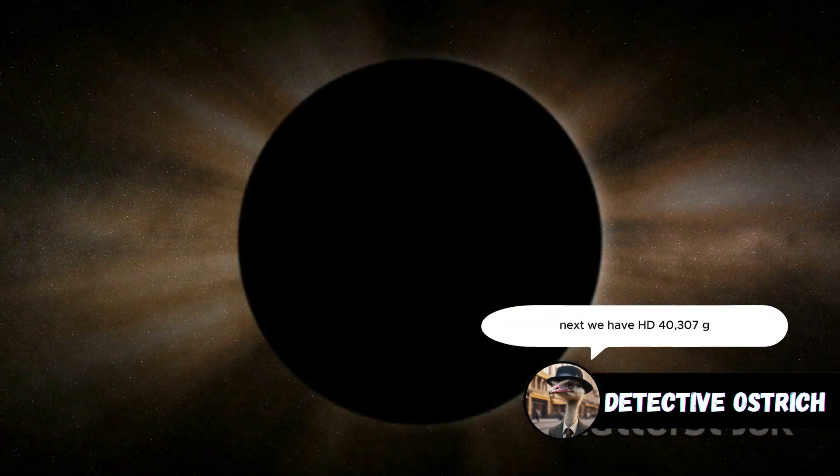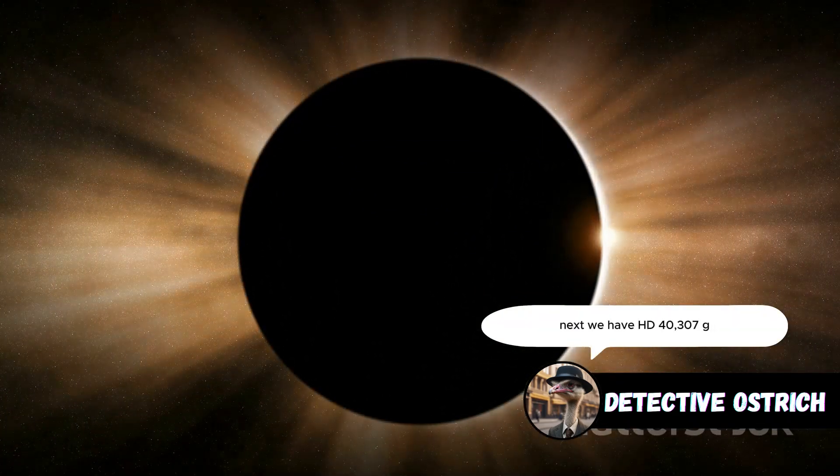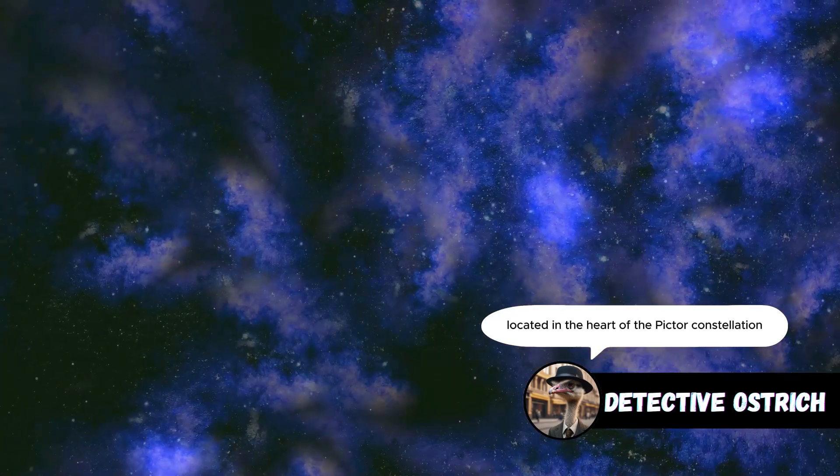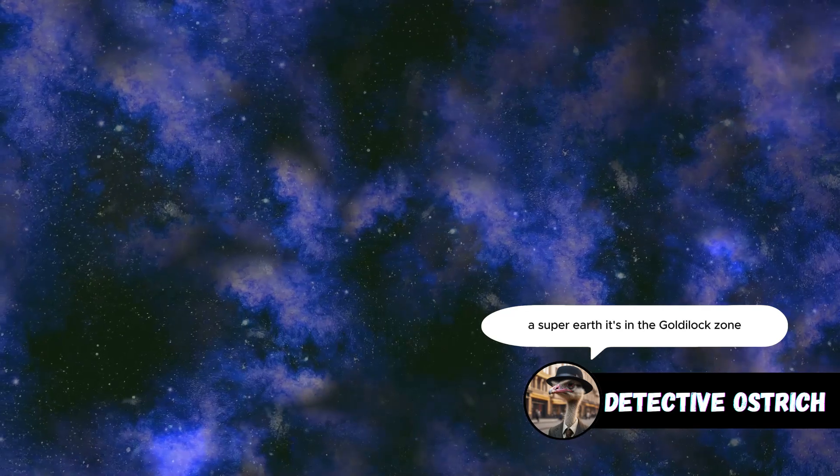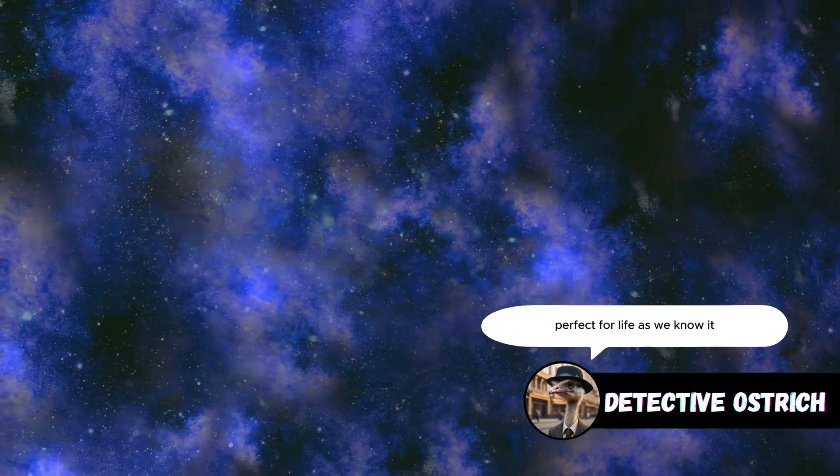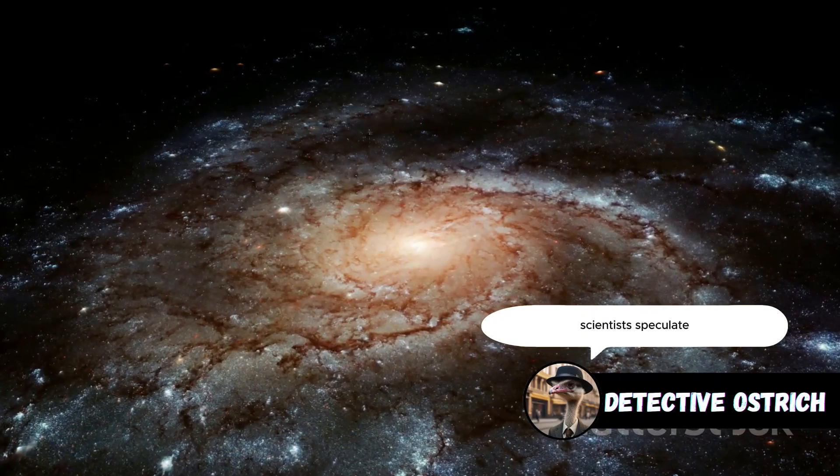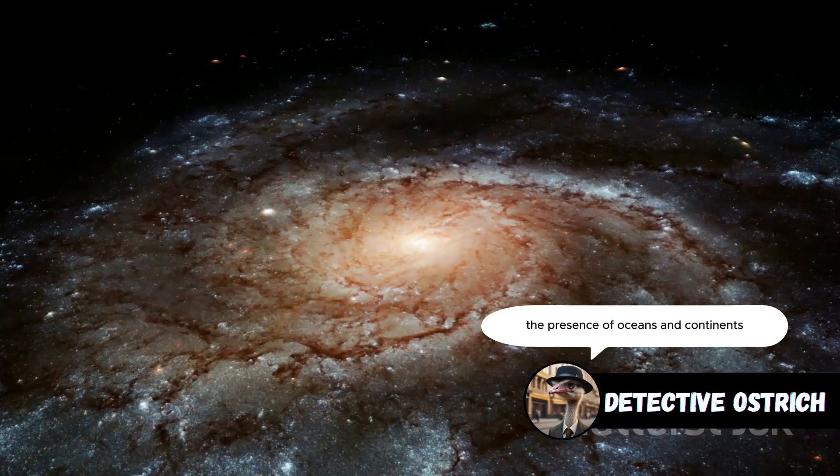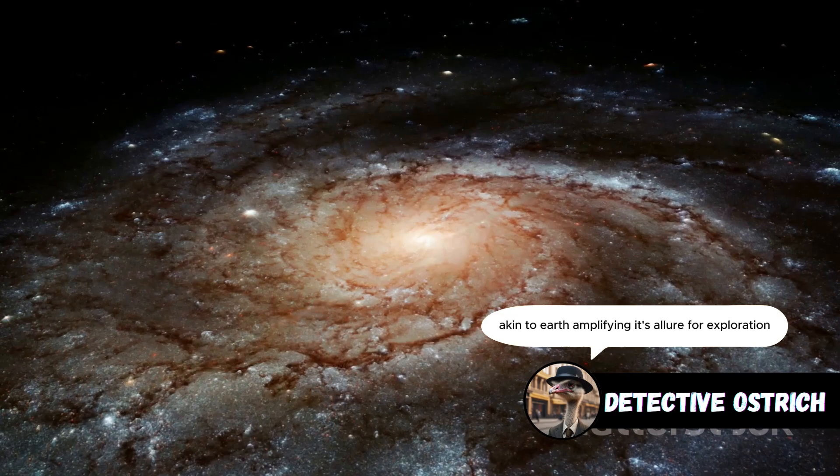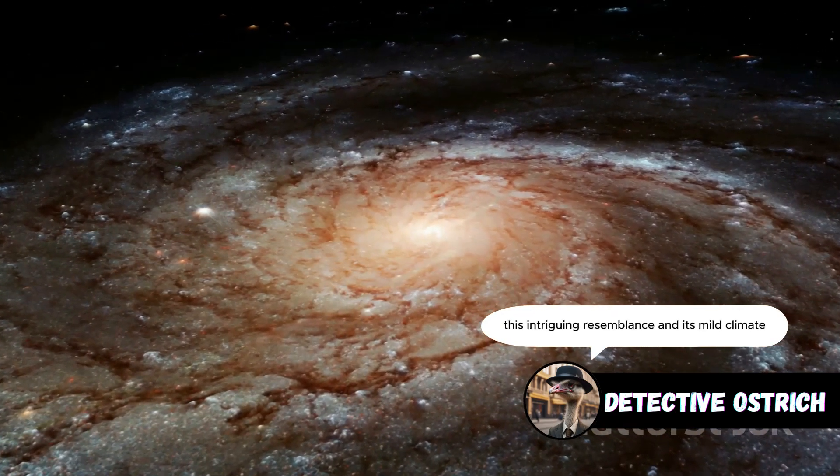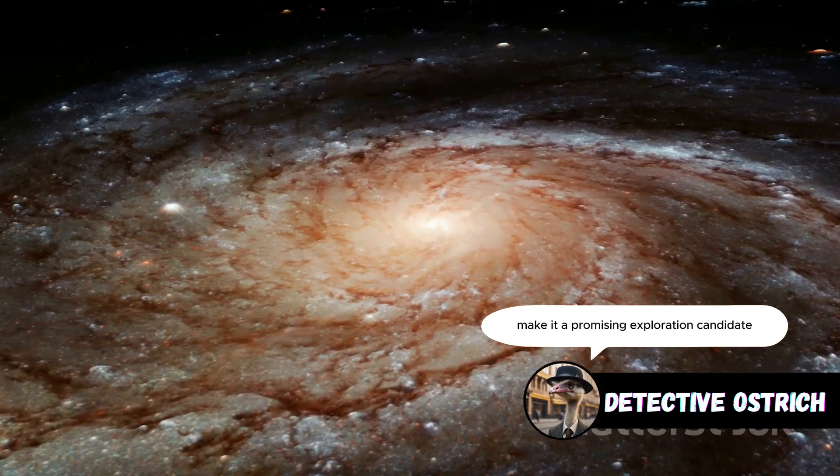Next, we have HD 40307g, a super-Earth located in the heart of the Pictor constellation. It's in the Goldilocks zone, perfect for life as we know it. Its size is astounding, much larger than Earth. Scientists speculate the presence of oceans and continents akin to Earth, amplifying its allure for exploration. This intriguing resemblance and its mild climate make it a promising exploration candidate.